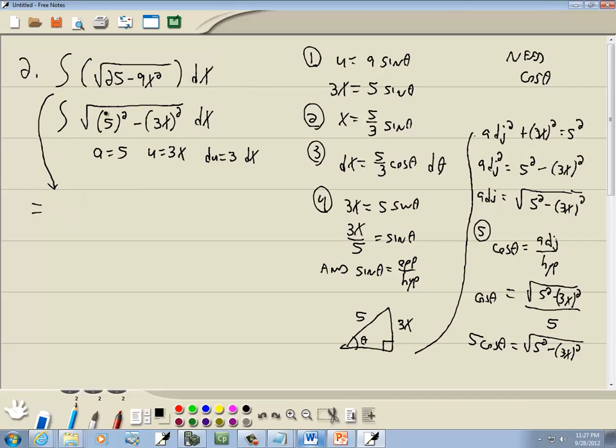Well now let's do our substitution. So this radical right here is equal to 5 cosine theta. The dx is equal to 5 thirds cosine theta d theta. So I'm going to take the numbers and put them out in front. So 5 times 5 is 25 thirds, and we got cosine squared theta d theta. Now our power reducing formula says that cosine squared is equal to 1 plus cosine 2 theta over 2 d theta.